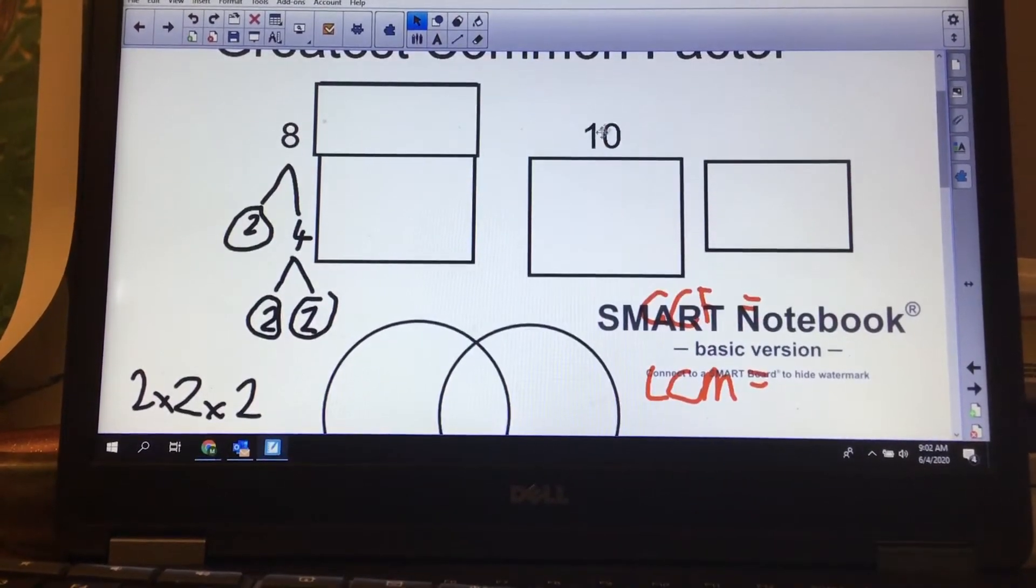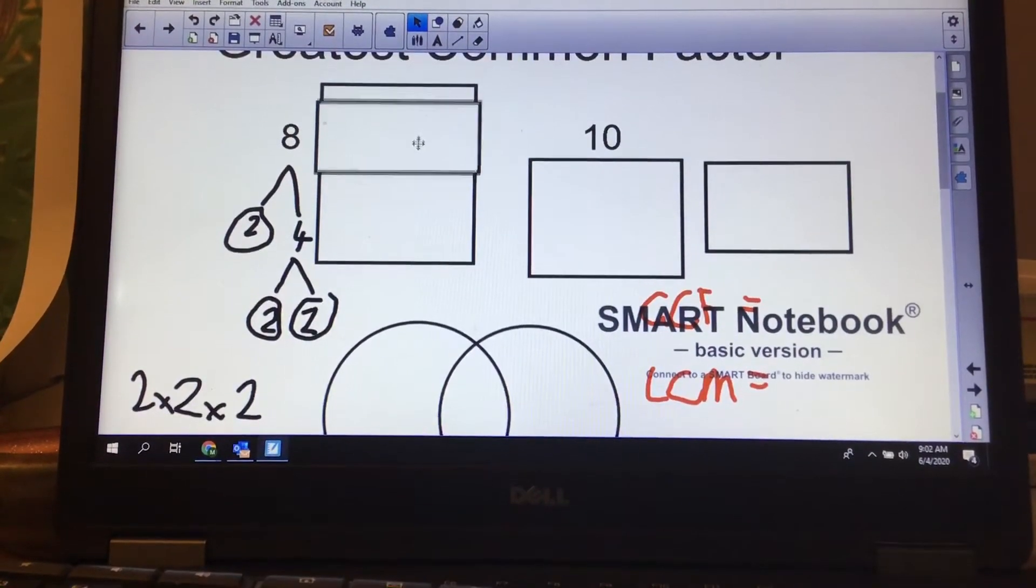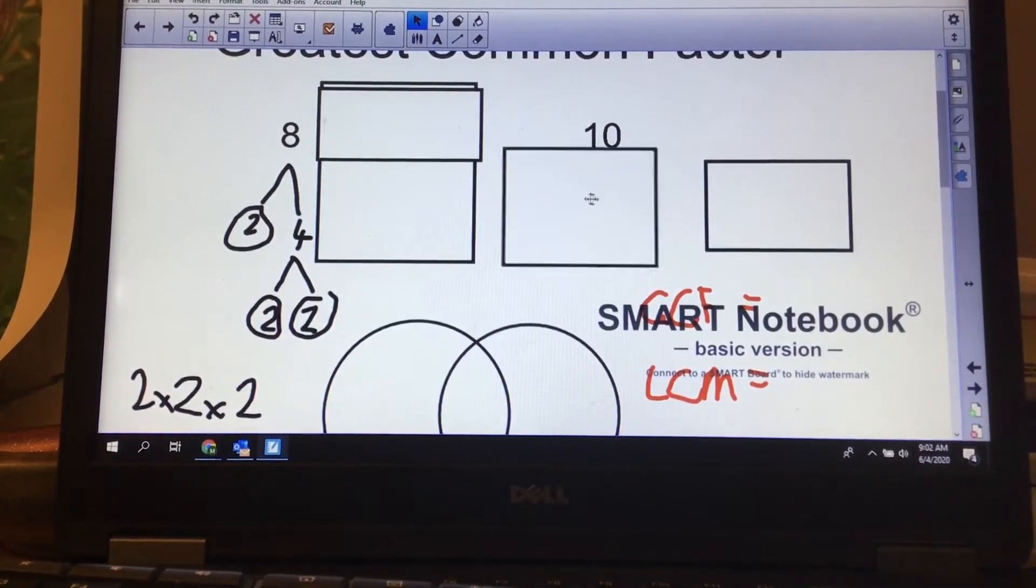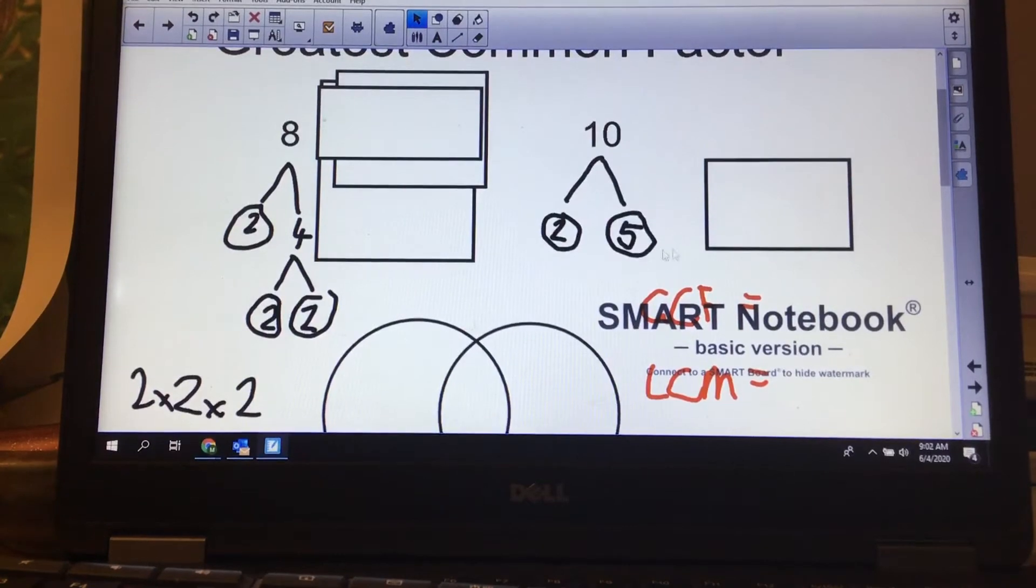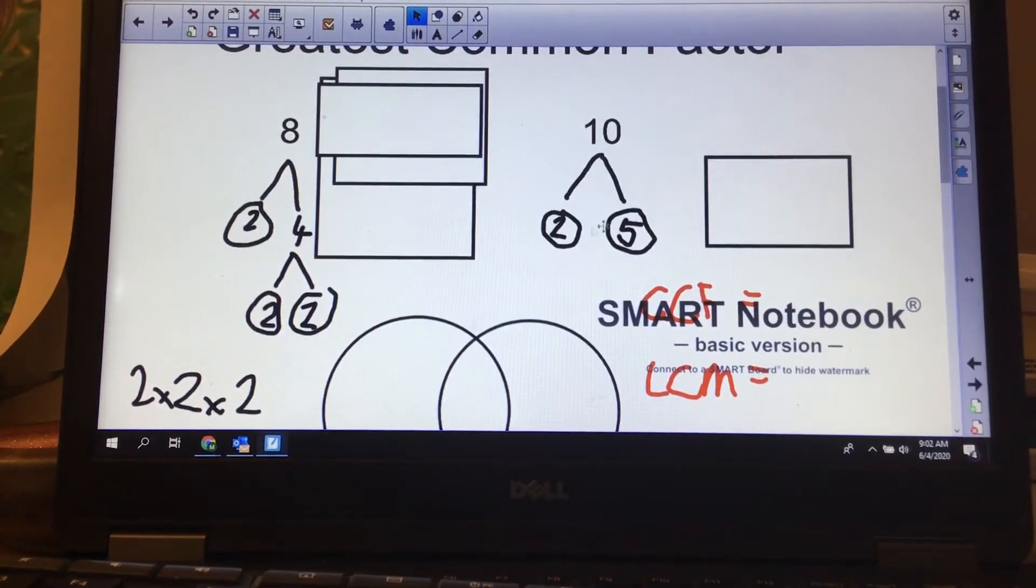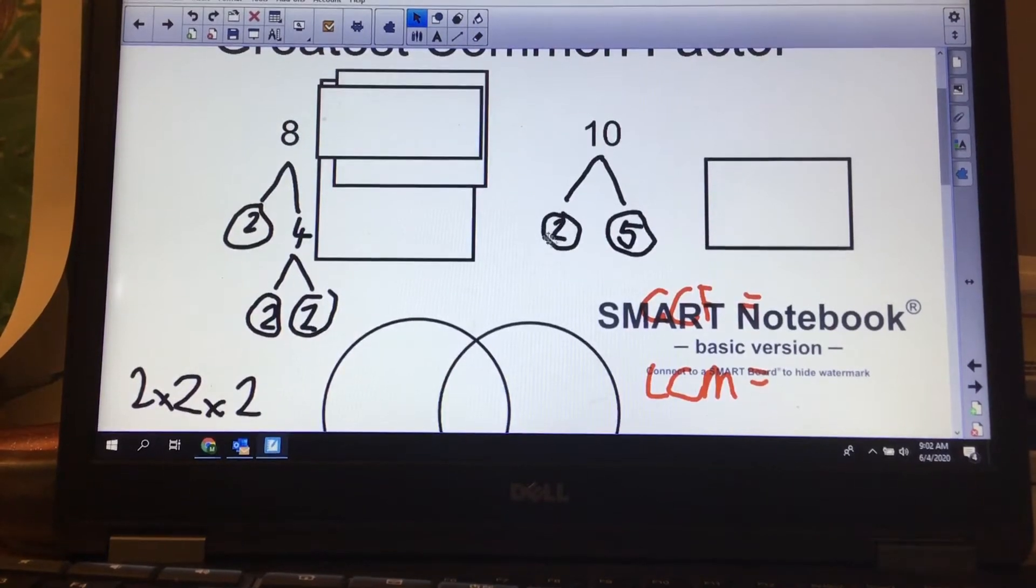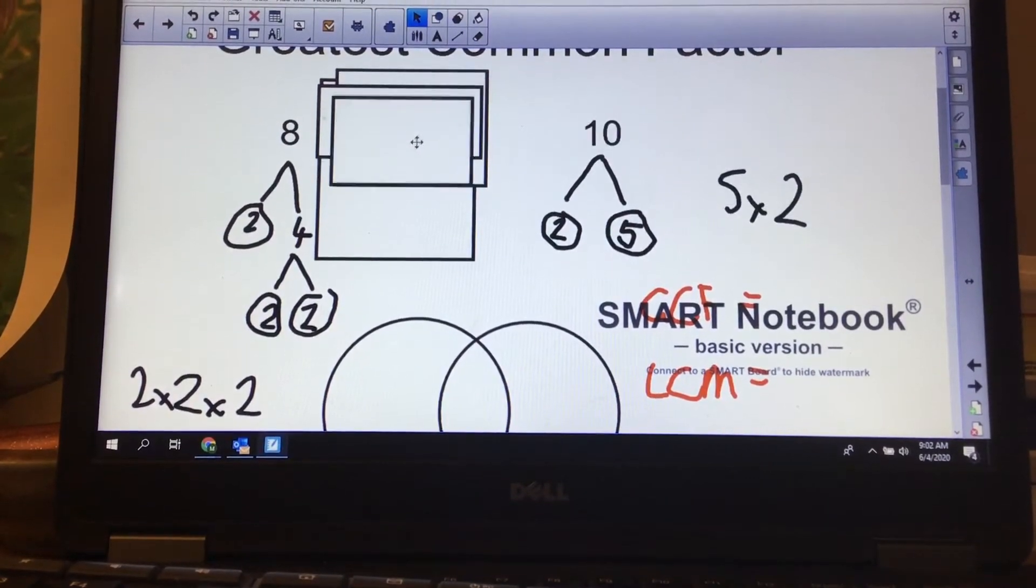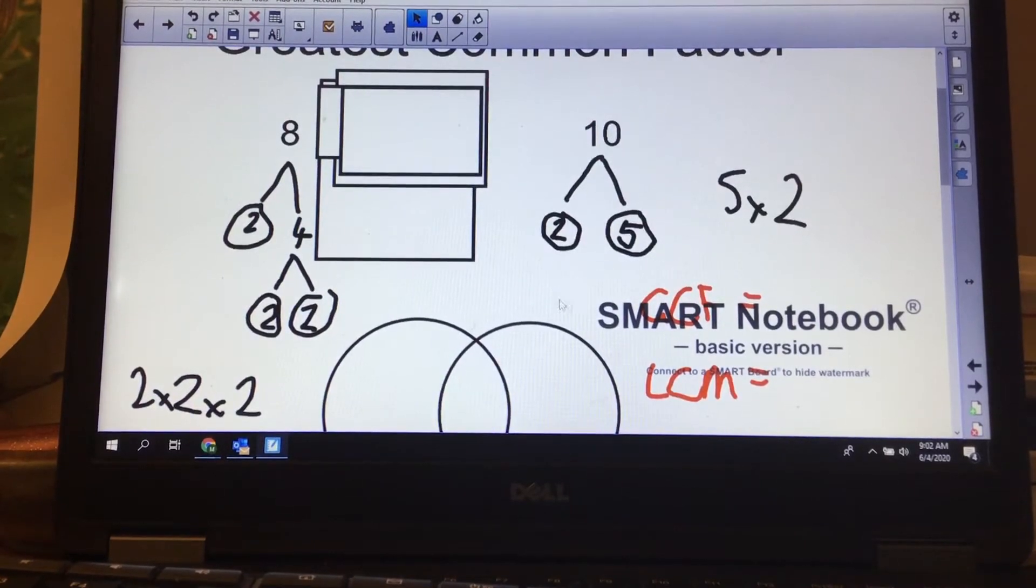To prime factorize 10, if we follow the rules, it ends in a 0 or 5, so I'm going to divide by 5. I divide by 5 and I've got 2 left over. 2 times 5, that's also prime, I circle it. It's a very easy one, so 5 times 2 is the prime factorization of 10.